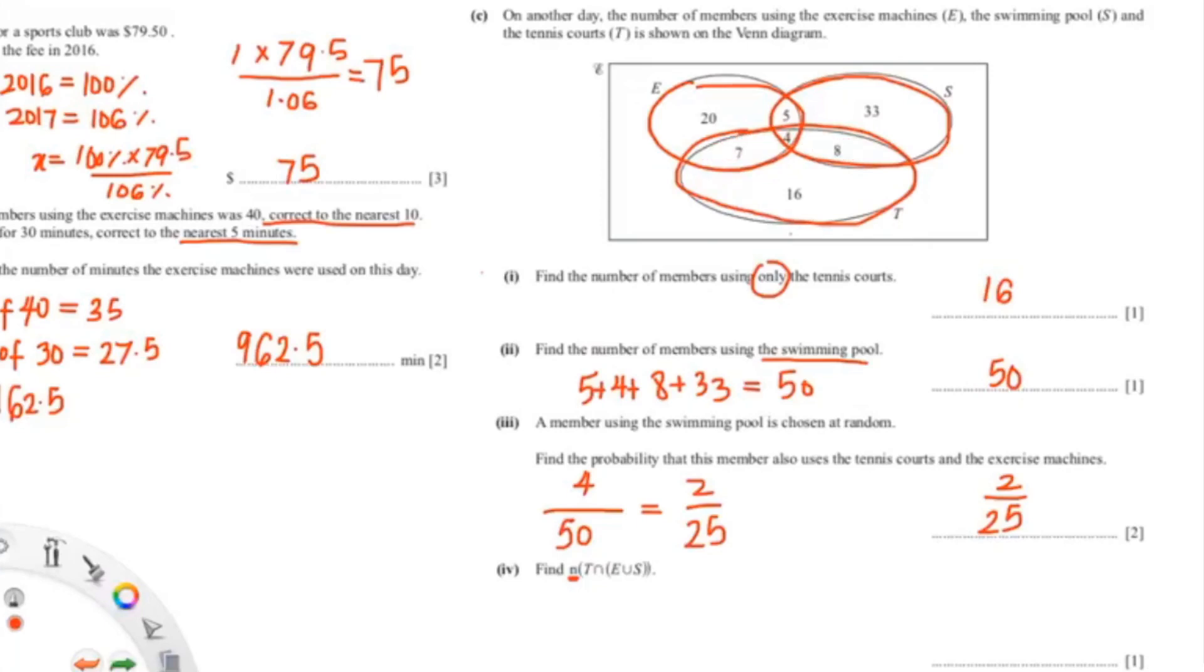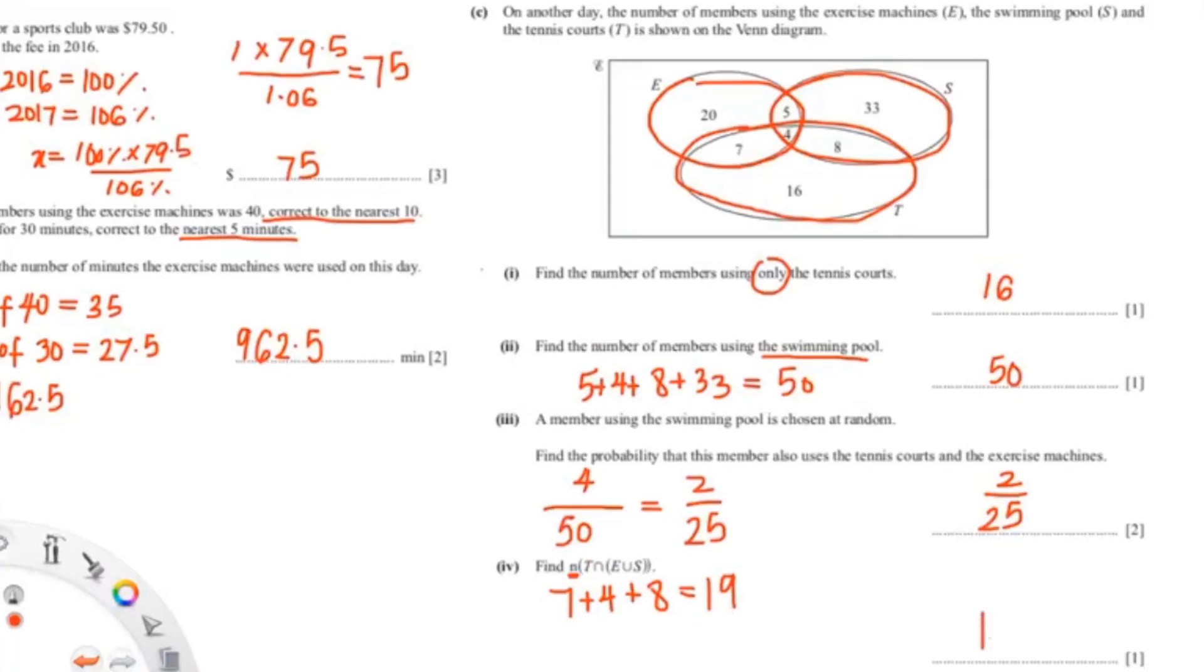Since we're finding the number, we can just add up 7 and 4 and 8. So that would be 7 plus 4 plus 8, giving us an answer of 19. So our final answer is 19.